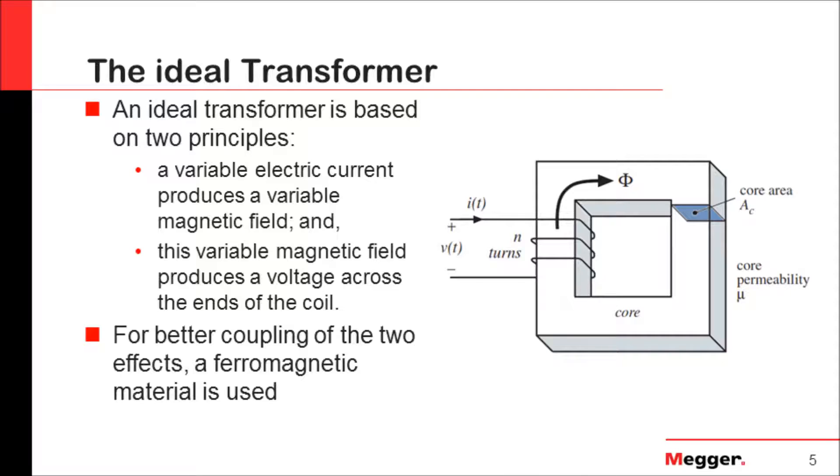The first one, a variable electrical current produces a variable magnetic field. And this variable magnetic field produces a voltage across the ends of the coil. So as you can see here in this simple example, we have an excitation voltage that is being applied to a coil. So now it's creating this electric current, a magnetic field, and you can see the flux through the path. In this case, the path is the magnetic core of the transformer, which has something specific for that material, which is the permeability of the core.